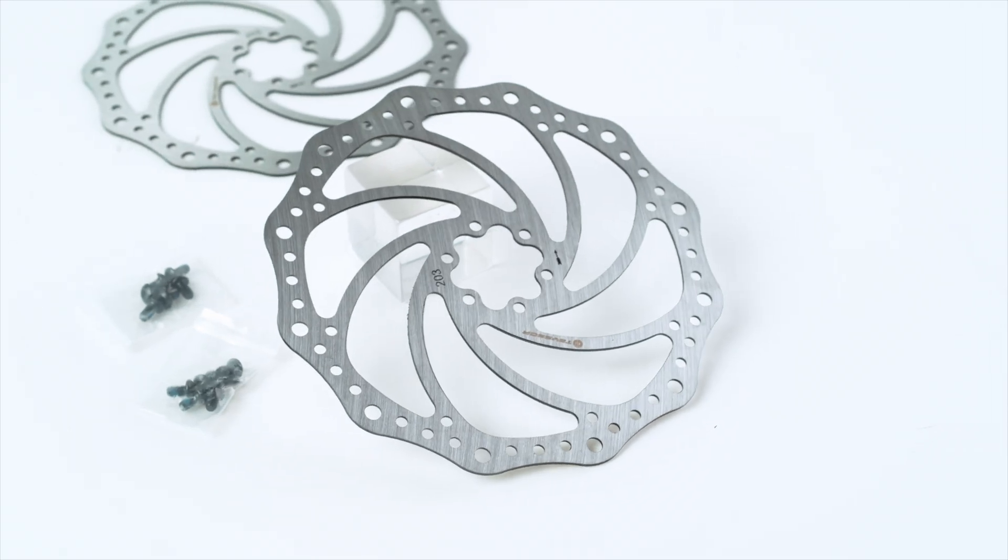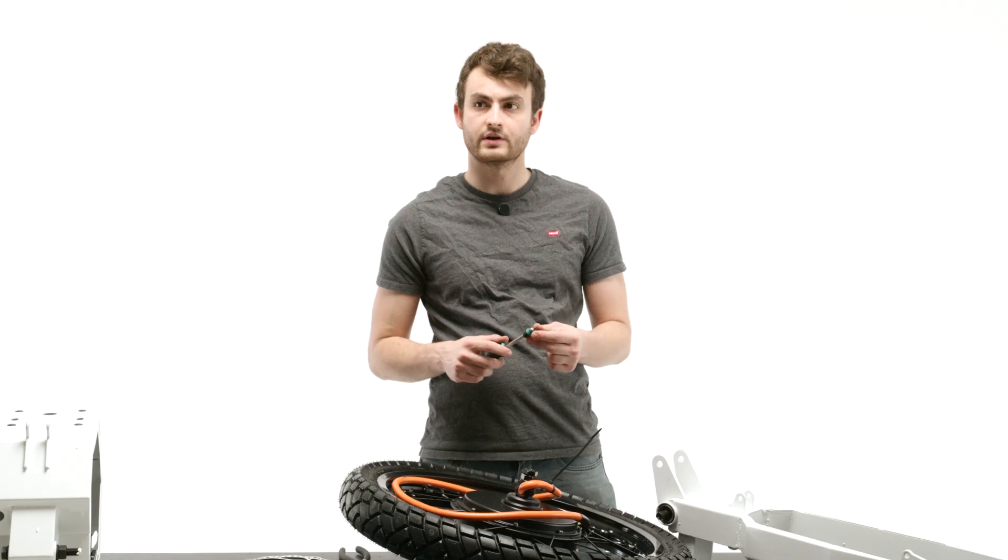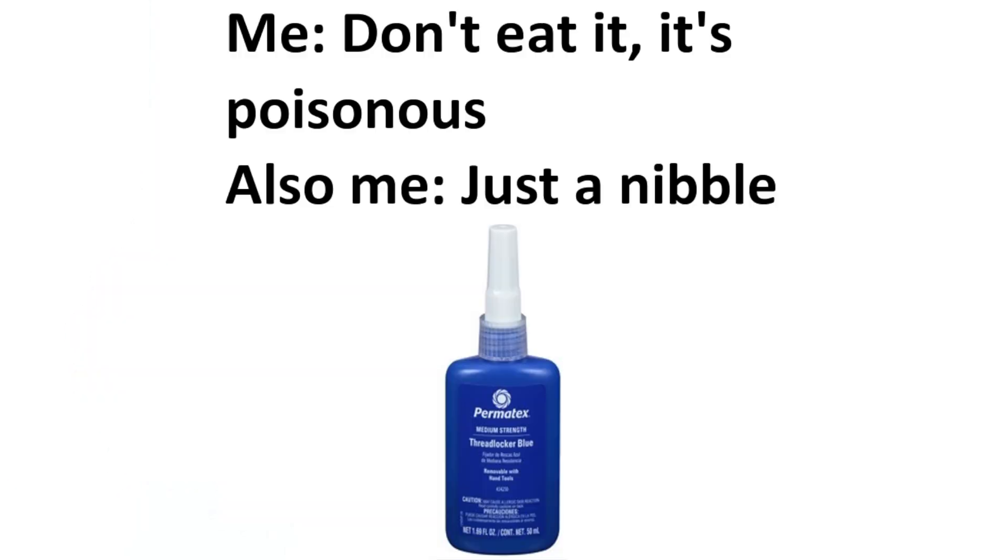We ordered two brake rotors and they each come with six screws in a little packet. So you'll need a screwdriver with a Torx T20 bit. Now in mounting these, I really like to use blue thread locker, blue Loctite. These things vibrate and you don't want things to vibrate loose over time.